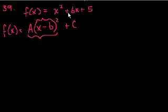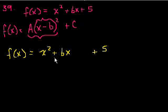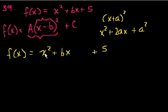You could memorize it — it ends up being minus b over 2a — but let's actually solve it so you have the intuition. f(x) = x² + 6x + 5. We want to turn x² + 6x into a perfect square by completing the square. If we do (x + a)², that equals x² + 2ax + a². Mapping that here: 2ax = 6, so a = 3.